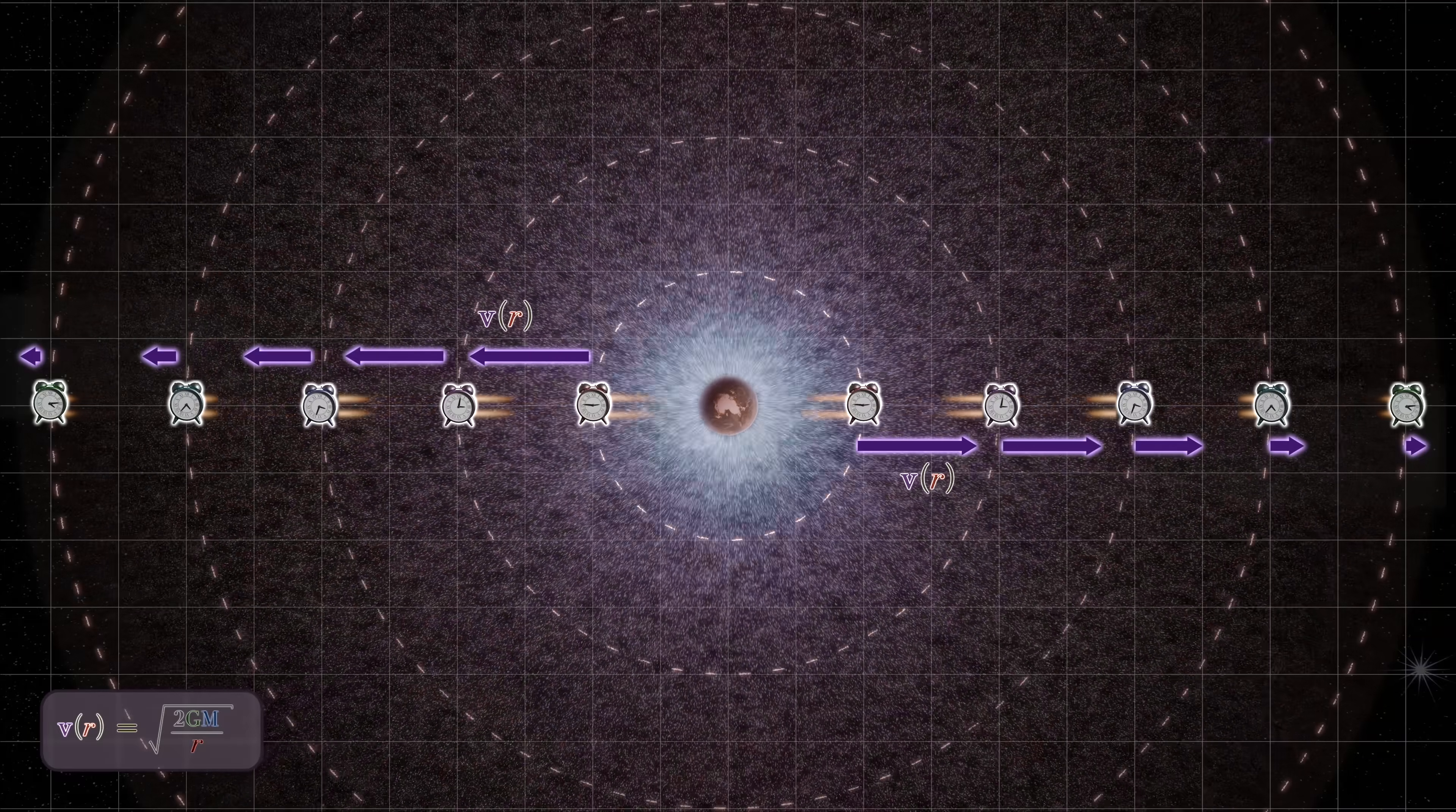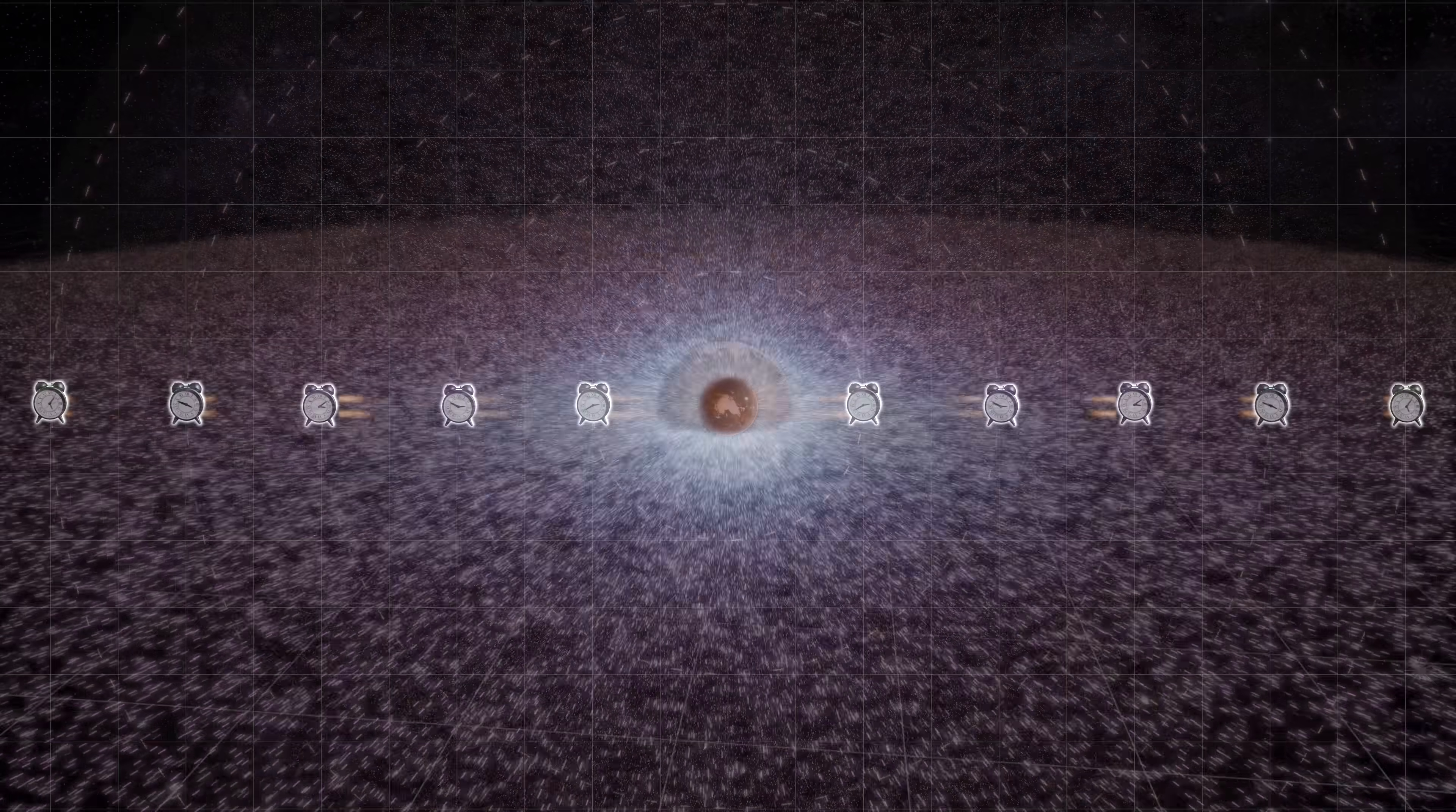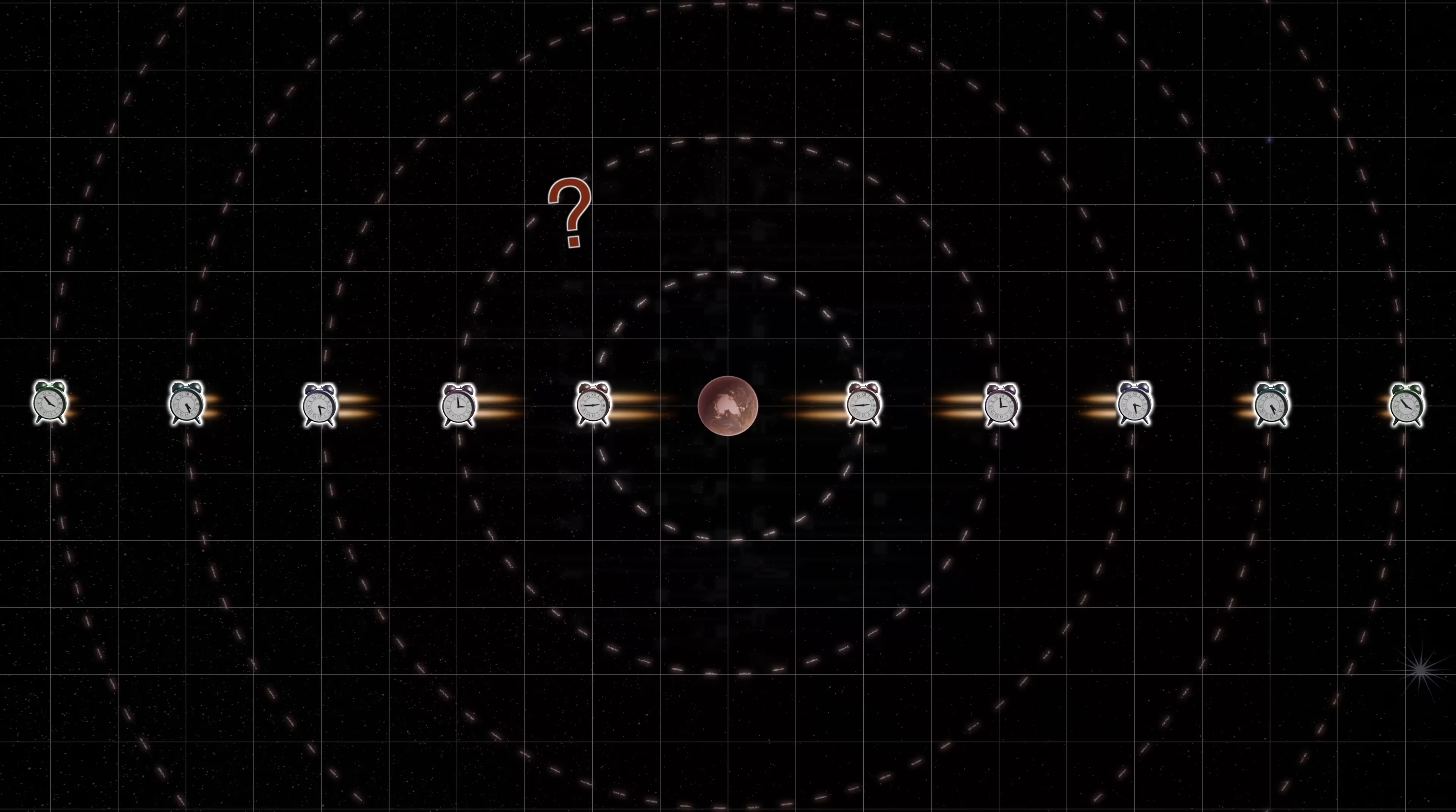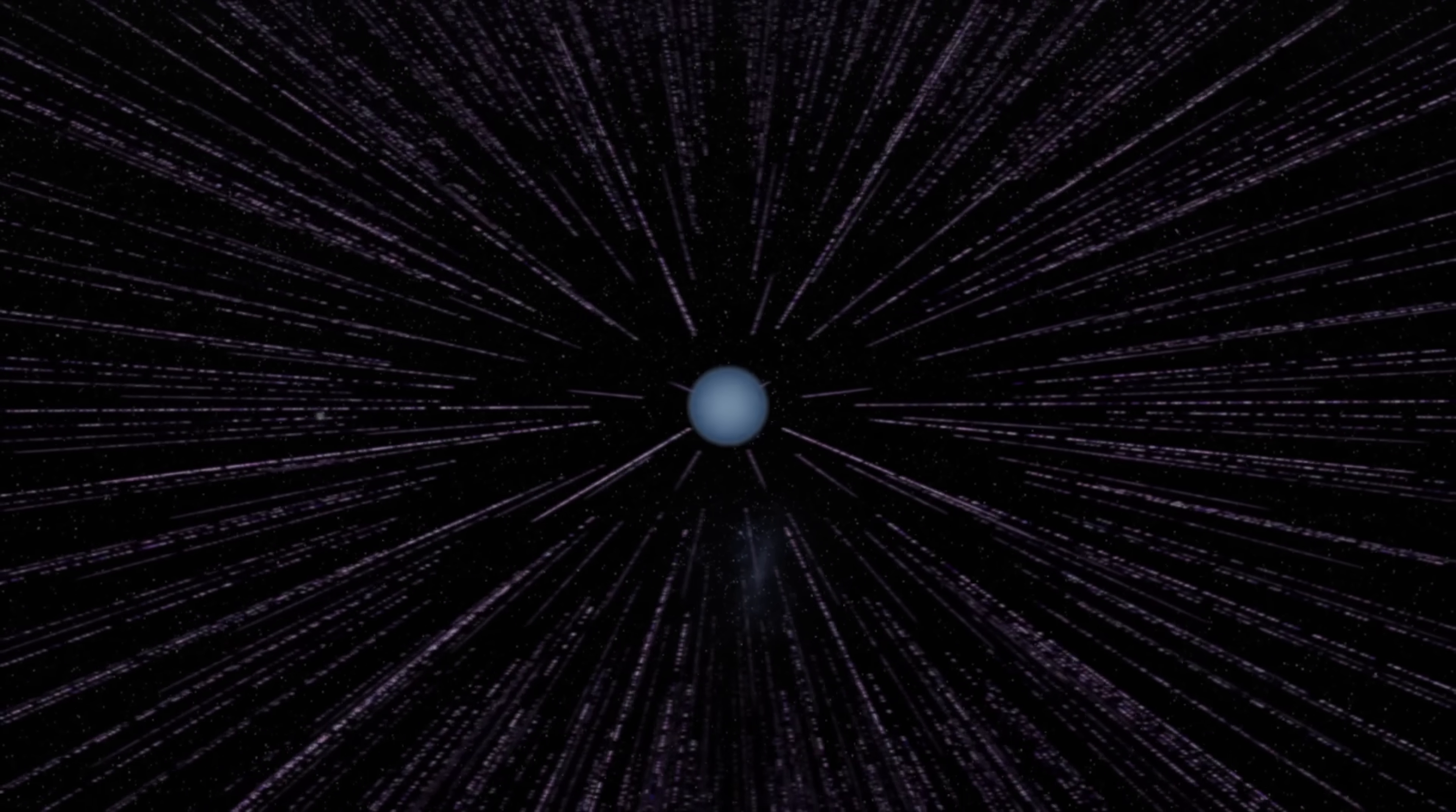Now, of course, there aren't really fields of particles flowing into gravitational masses. So this leaves us with the all-important question. Just what is flowing here? Well, the answer to that question is space. Space is what is flowing.